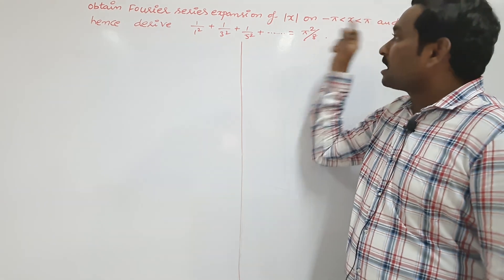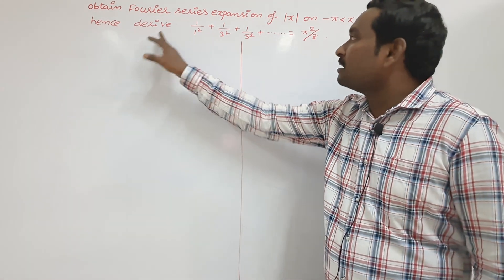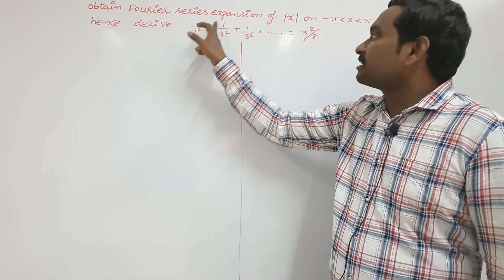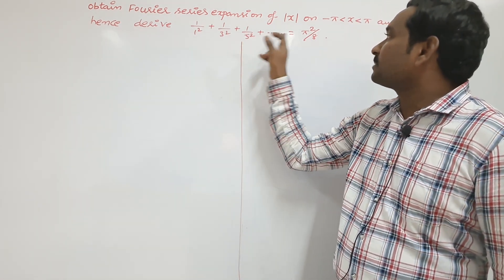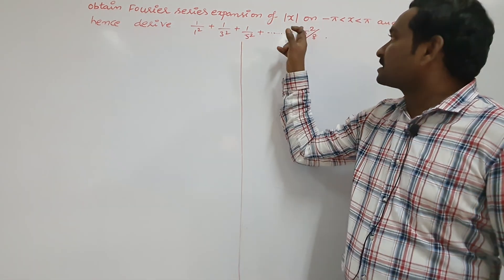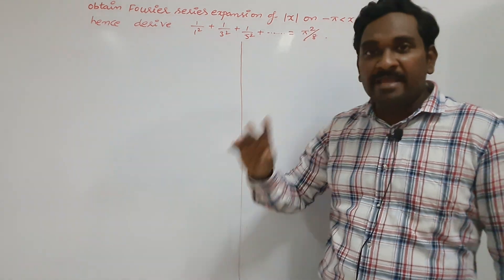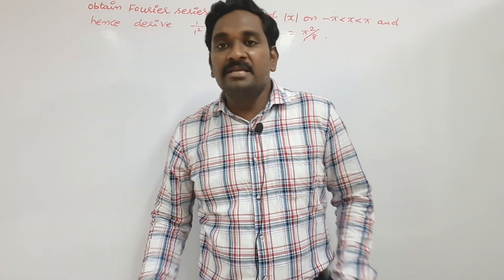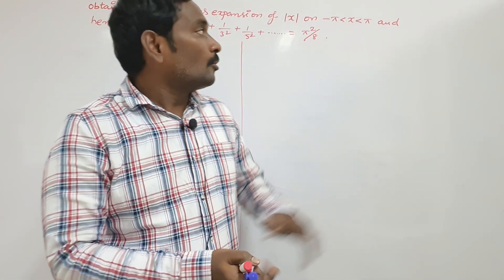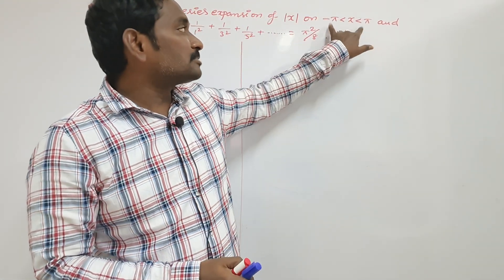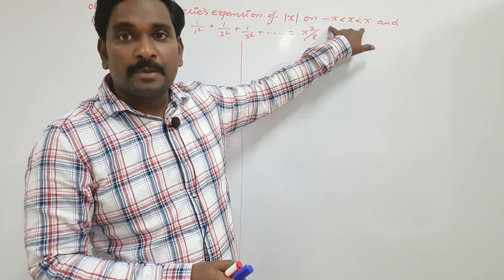And also derive that 1 by 1 square plus 1 by 3 square plus 1 by 5 square and so on equals pi square by 8. Here, the given function is defined on the open interval minus pi comma plus pi.